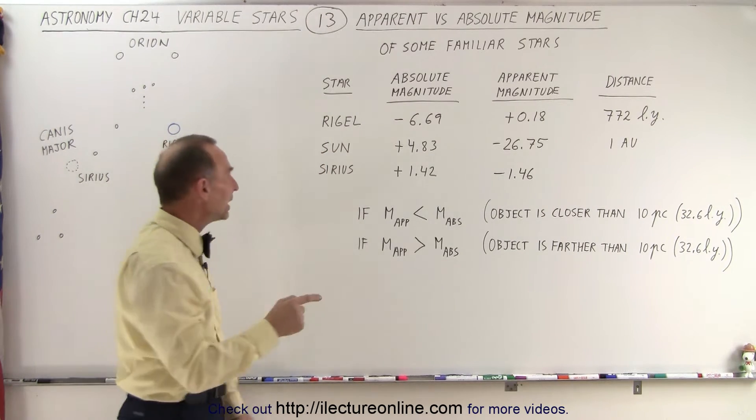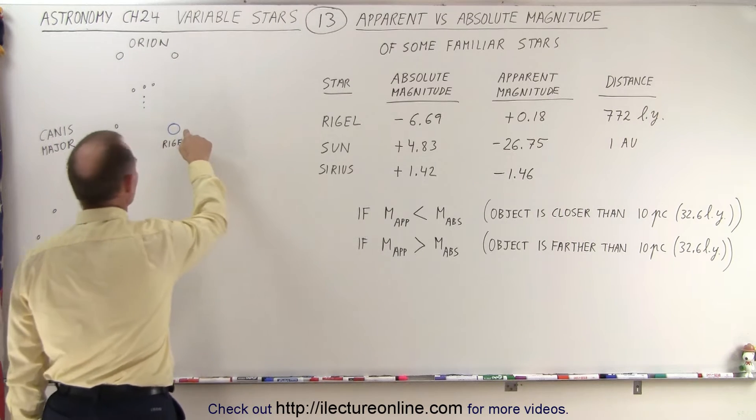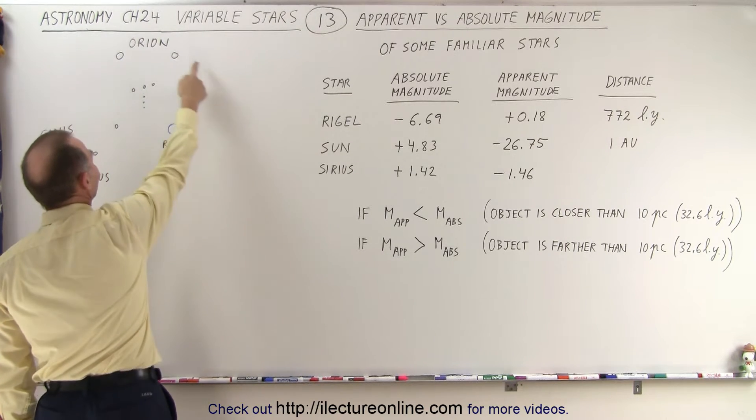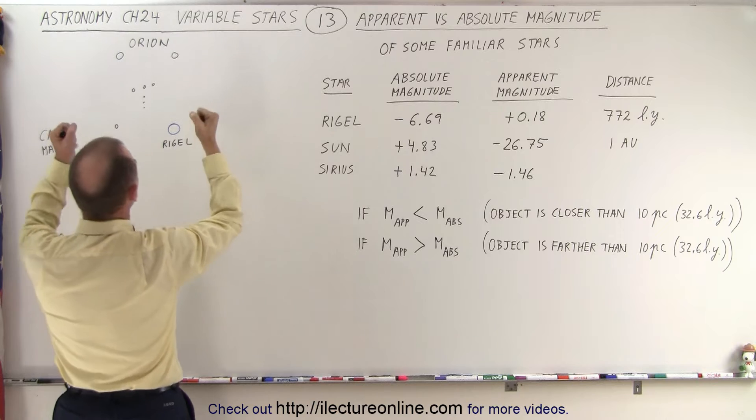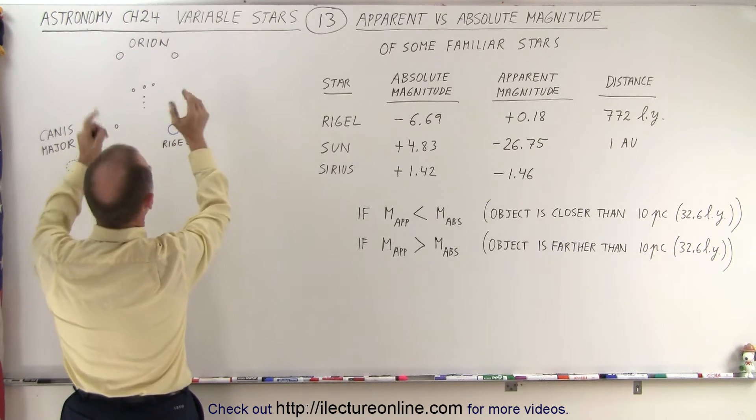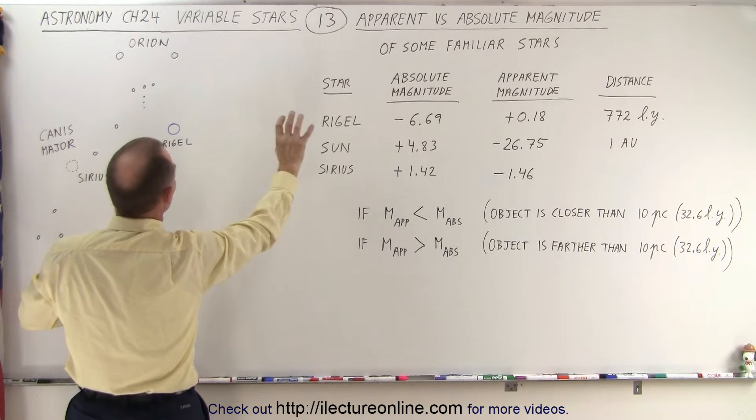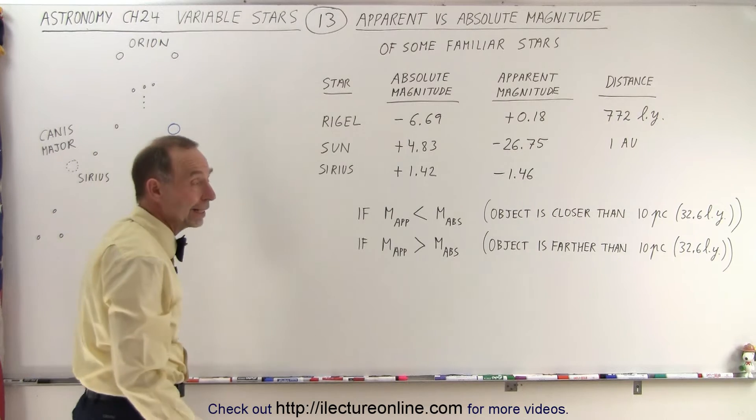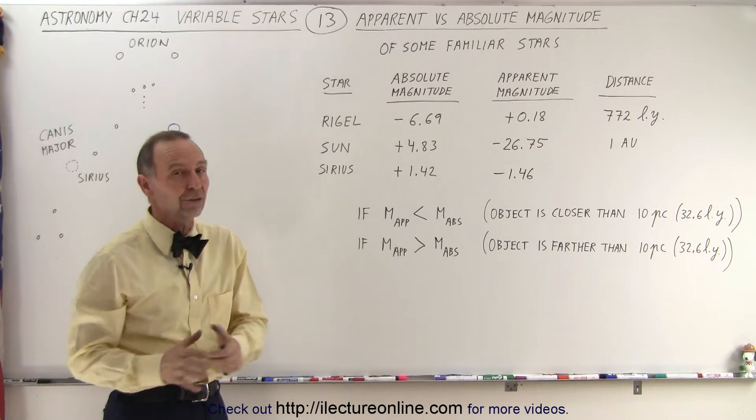Which star is Rigel? Well, Rigel is that really bright bluish-white star inside the constellation of Orion. So when you look southward, you see the constellation of Orion. To the bottom right, that big star there, that's called Rigel. And it's a very bright star, one of the brightest stars in the sky.